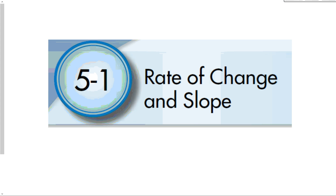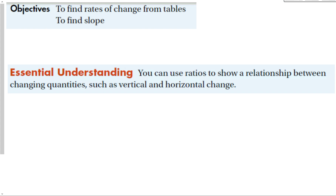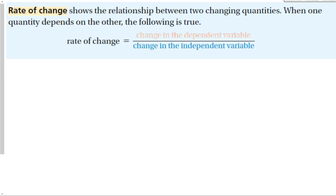5-1: Rate of Change and Slope. The objective for this section is to find rates of change from tables and to find the slope. Our essential understanding is that we can use ratios to show a relationship between changing quantities, such as vertical and horizontal change, which is what slope is.